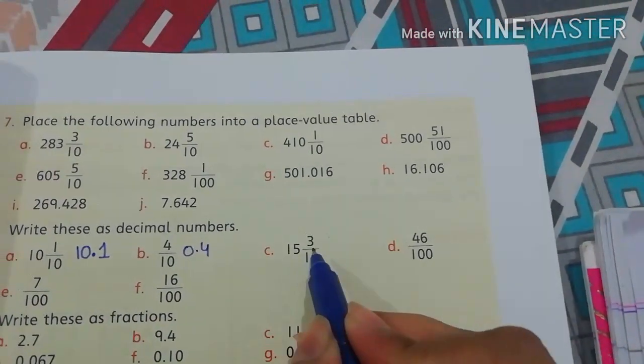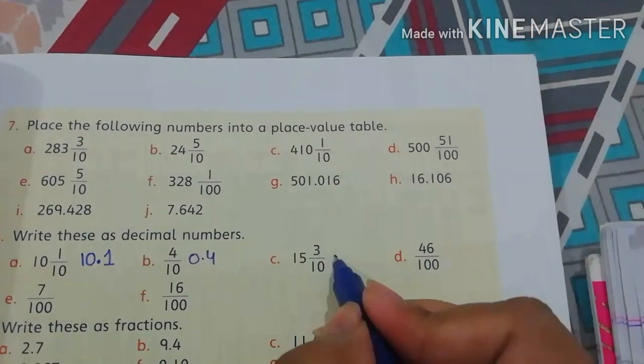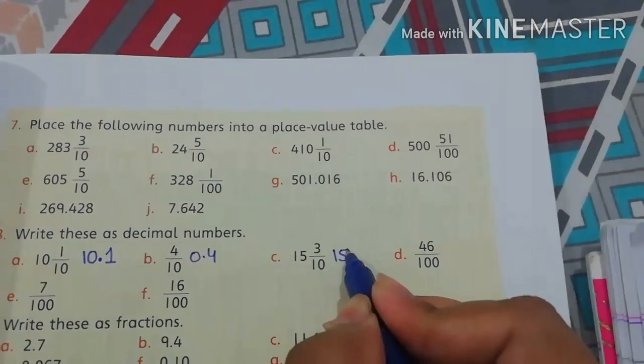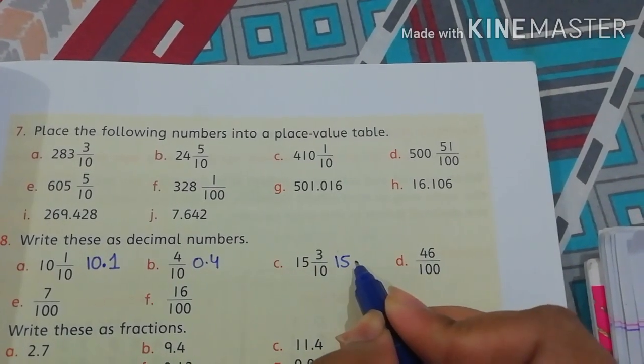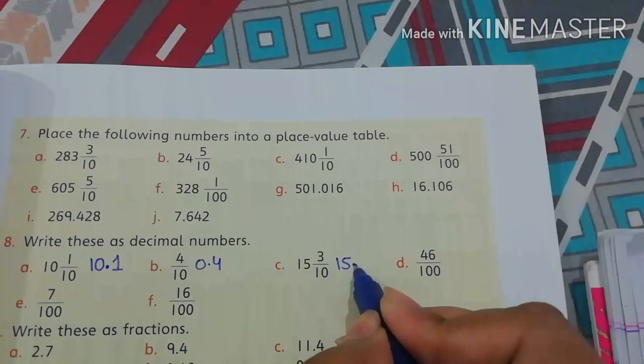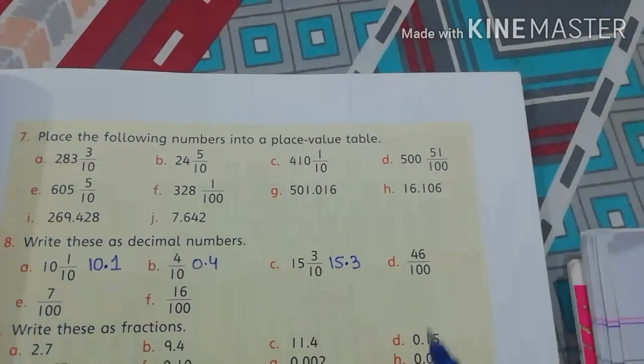Part C: 15 whole 3 by 10. We do not change 15. 3 by 10 in decimal is 0.3. So, 15.3.